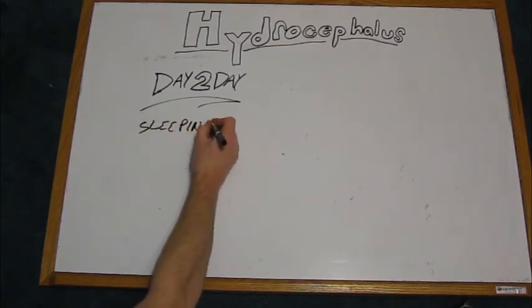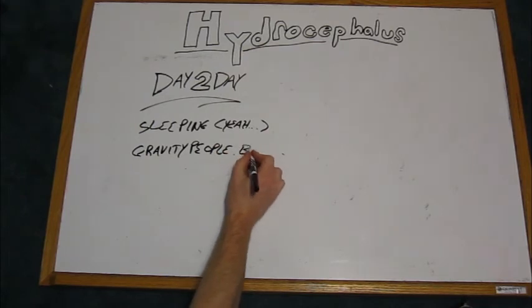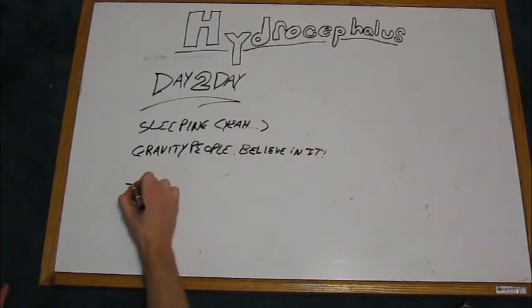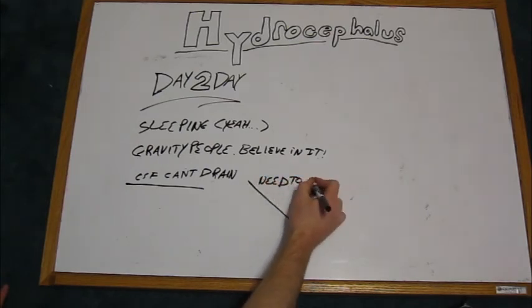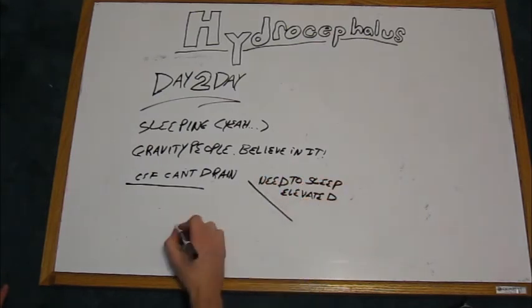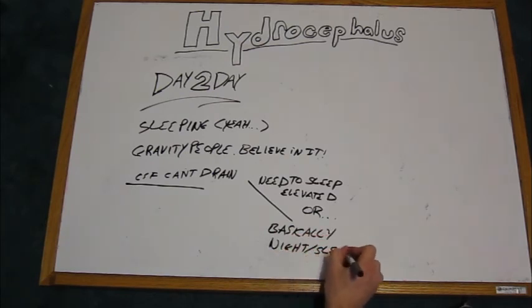Sleeping with hydrocephalus can also be difficult, thanks to gravity. Because of gravity, if you have a shunt as your form of treatment, you can't sleep flat, since the CSF won't be able to drain properly. You need to sleep elevated, or you basically have seizures in your sleep.